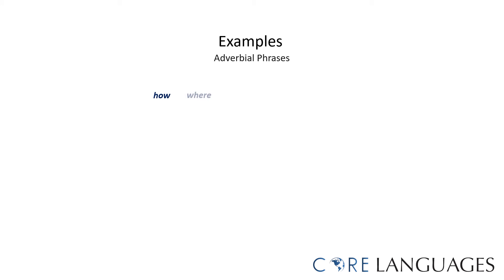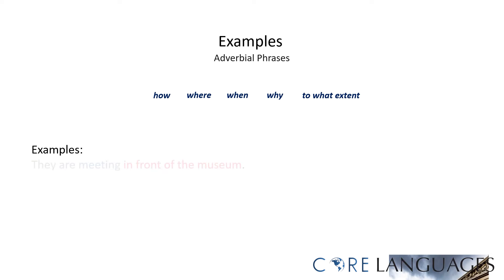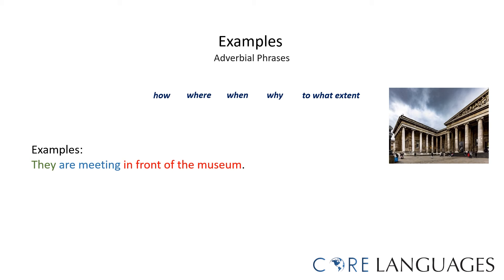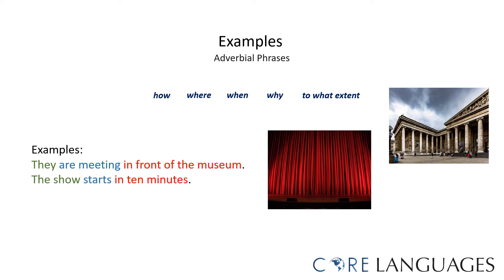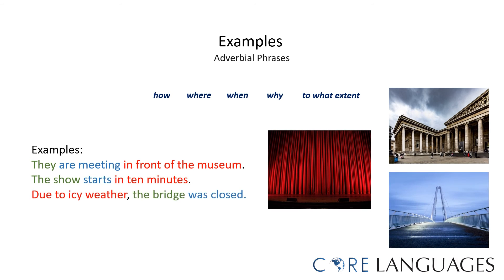It is important to remember that adverbial phrases help us express how, where, when, why, and to what extent something is done or is happening. For example, they are meeting in front of the museum — the adverbial phrase 'in front of the museum' helps us express where they are meeting. The show starts in 10 minutes — 'in 10 minutes' helps us express when the show starts. And due to icy weather, the bridge was closed — 'due to icy weather' helps us express why the bridge was closed.